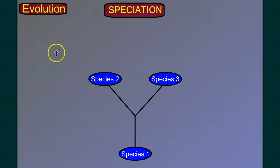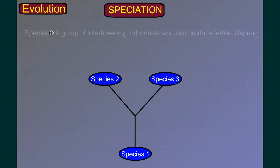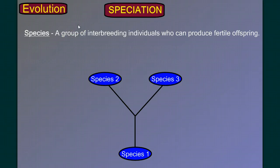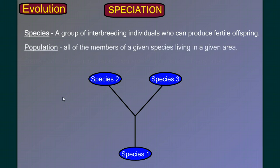Before we get too far along, we need to define a couple terms that are going to be useful. The first is species — a group of interbreeding individuals who can produce fertile offspring. We'll talk more about the concept of species in part four, population genetics, but for now that'll do. Population: all the members of a given species in a given area.